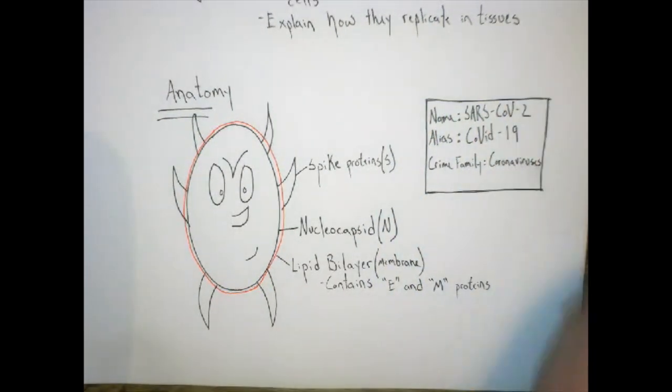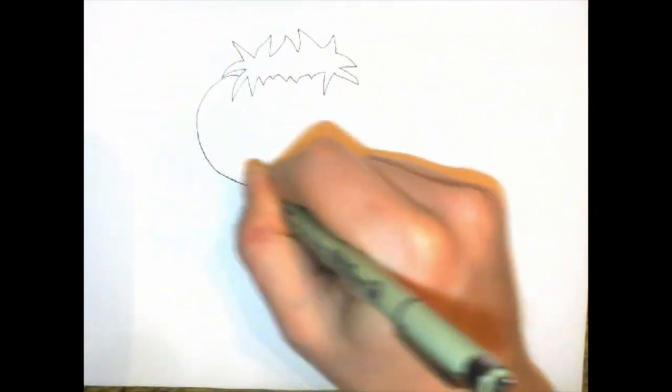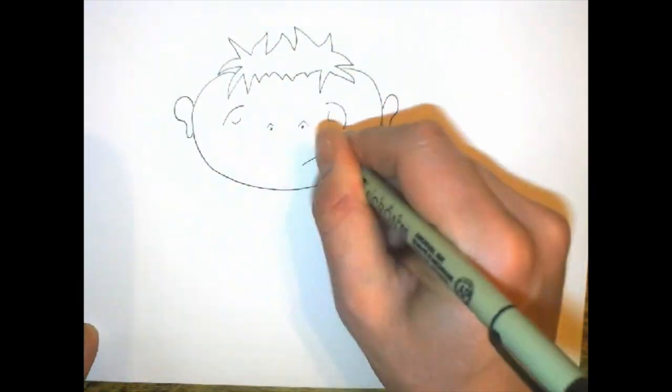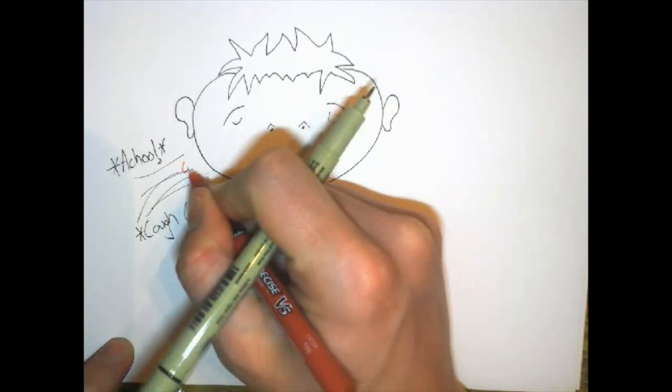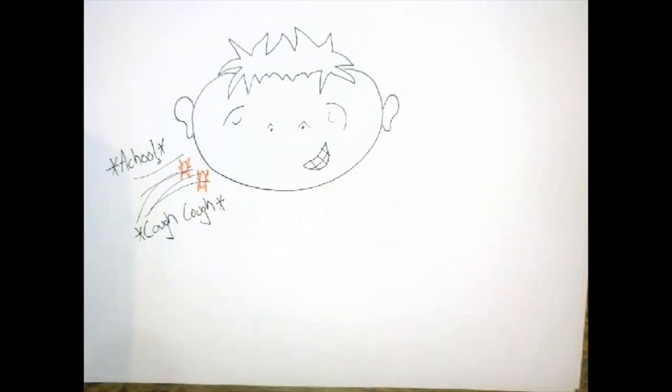But it's got to get to the right cells first. A coronavirus infects a person's airways through the mouth and nose, so the only way a person can become infected is either through direct human-to-human transmission, like if someone coughs or sneezes in your face, or by touching a contaminated surface and then touching your mouth or nose.